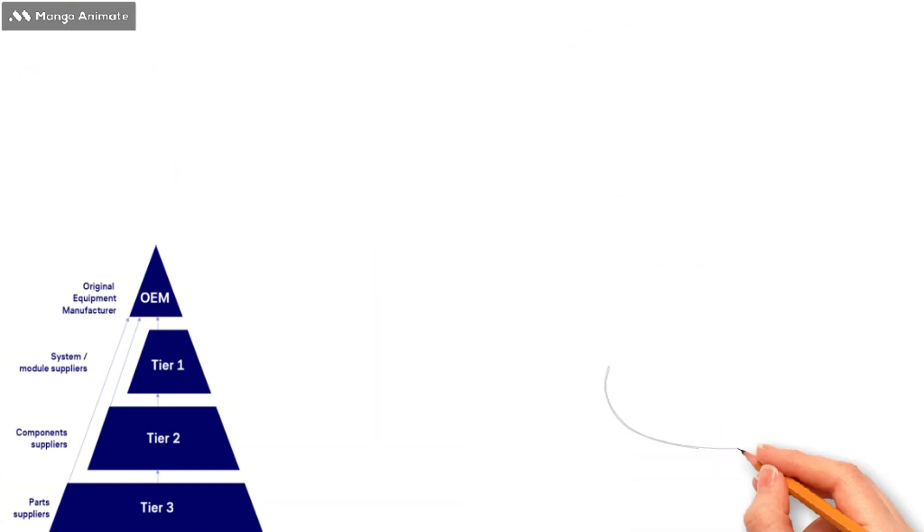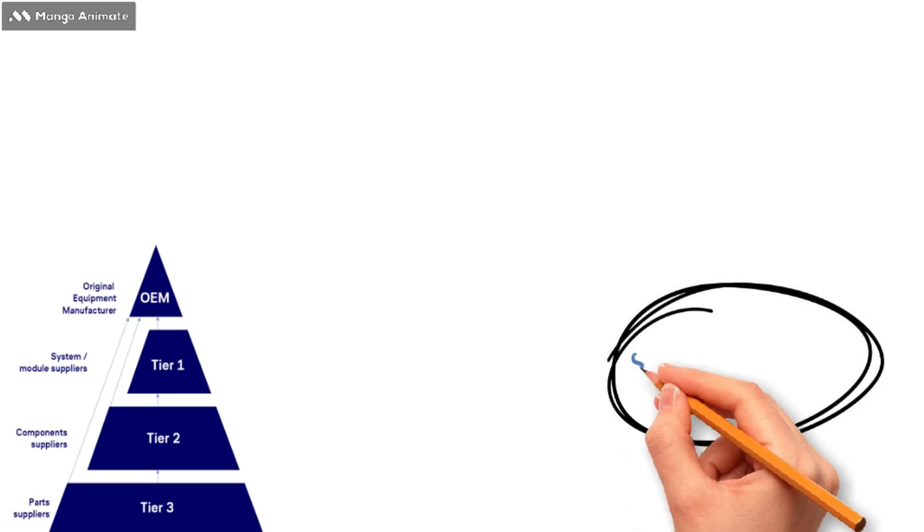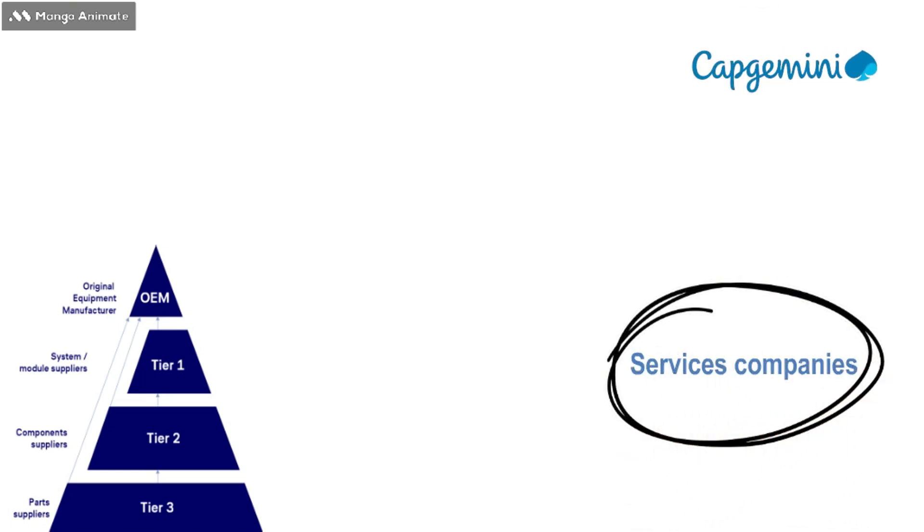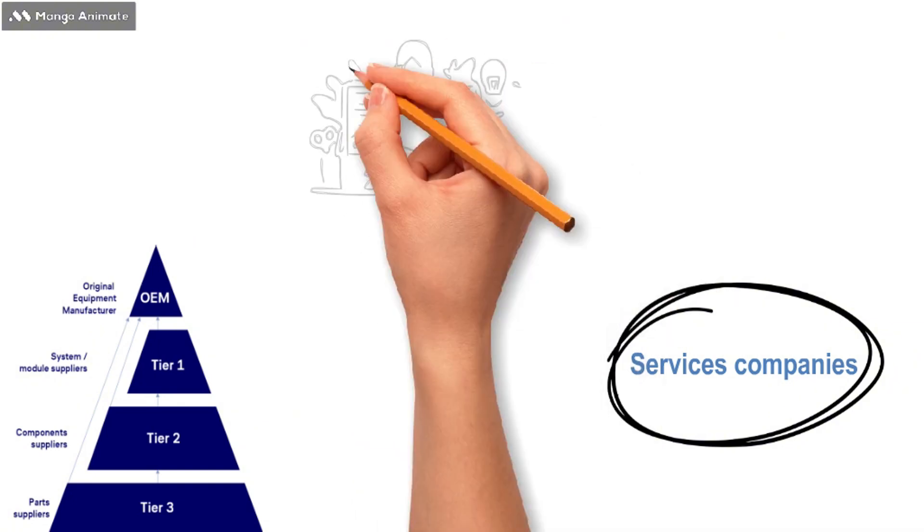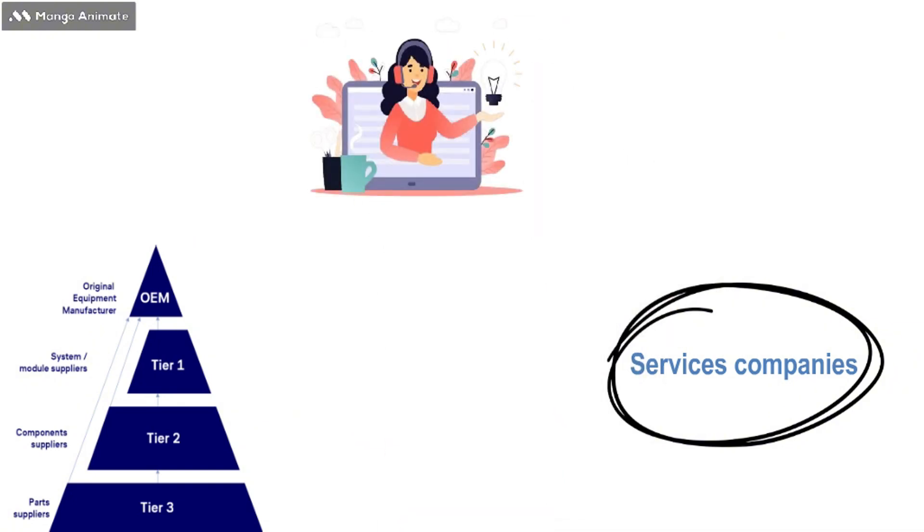Finally, services companies such as Tabjimini Engineering, Alten and Sigola Technologies act as strategic engineering service providers offering consulting expertise and technical support across all tiers of the automotive supply chain. So let's get started.